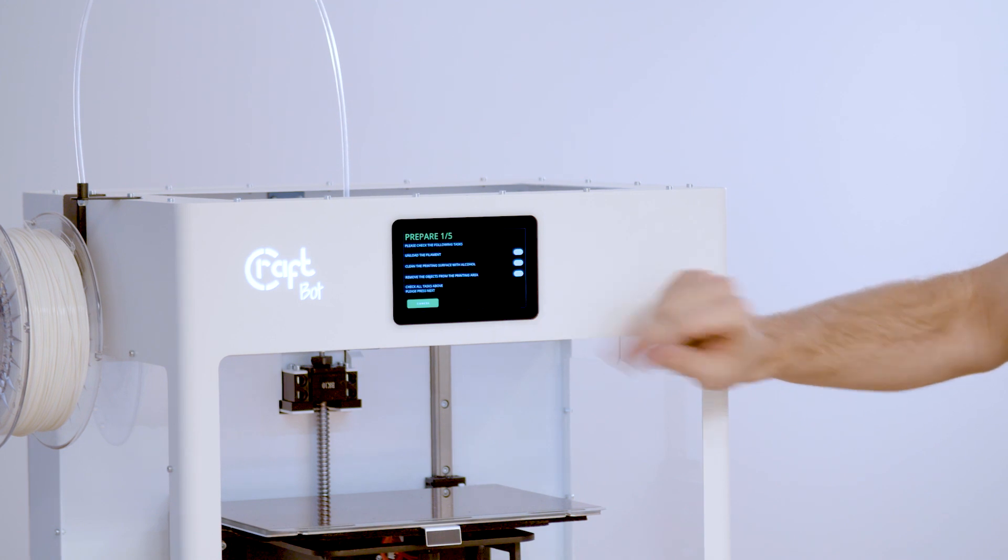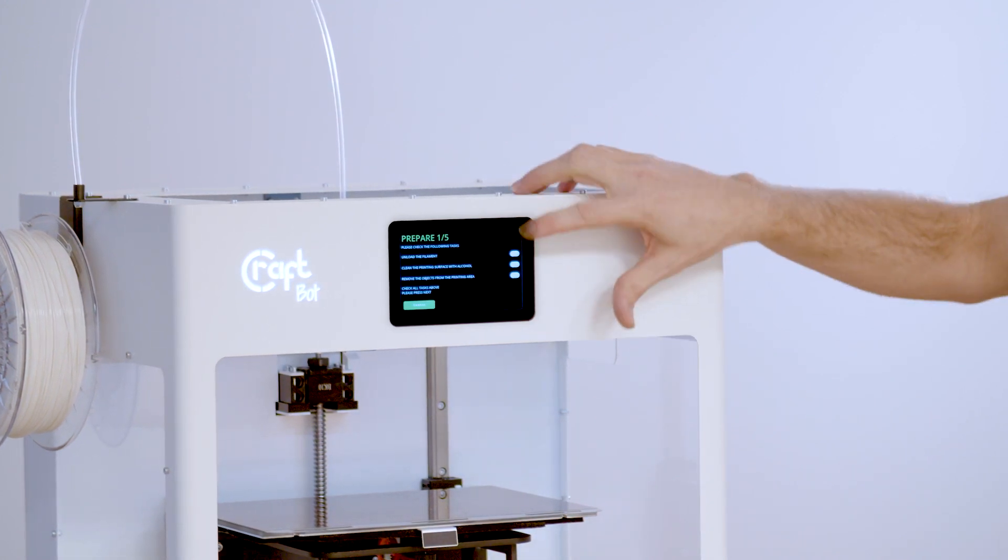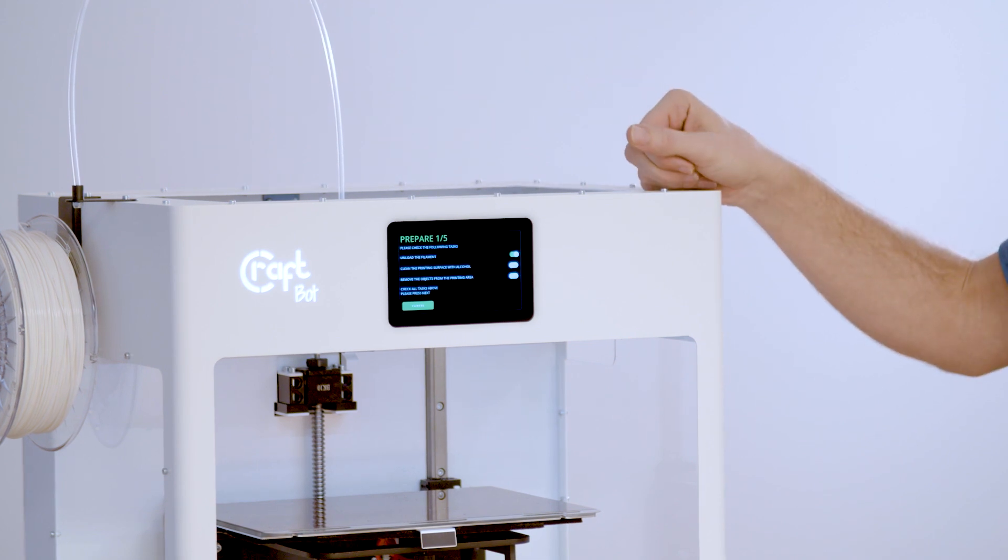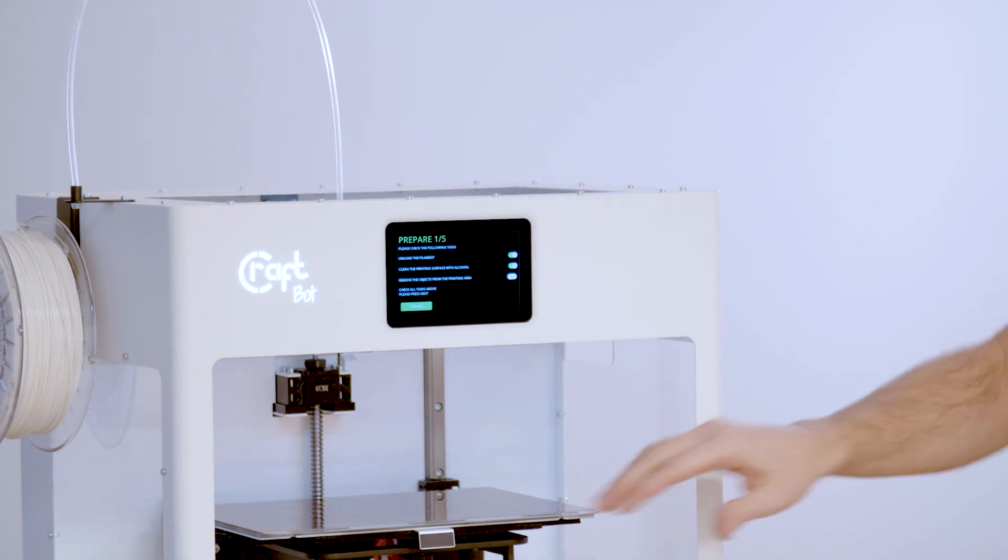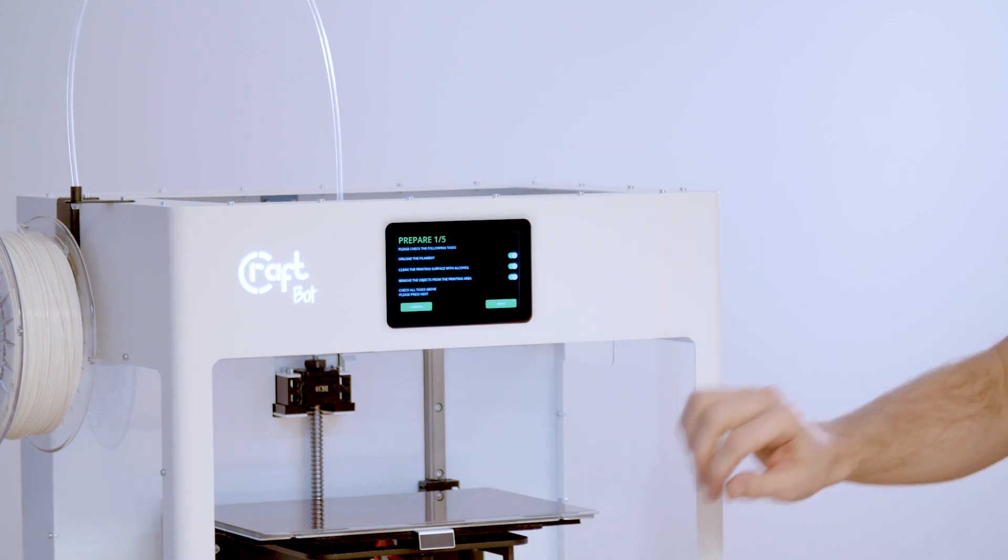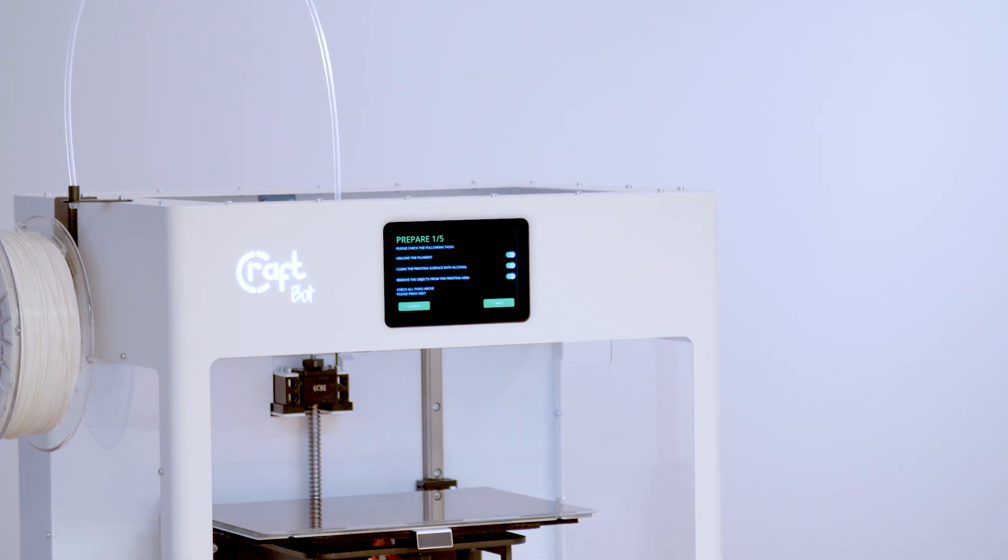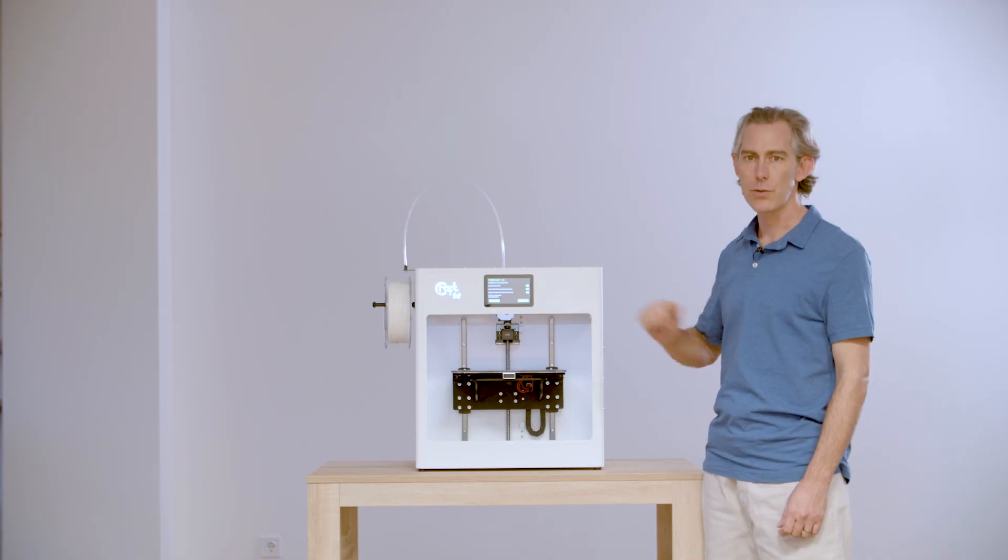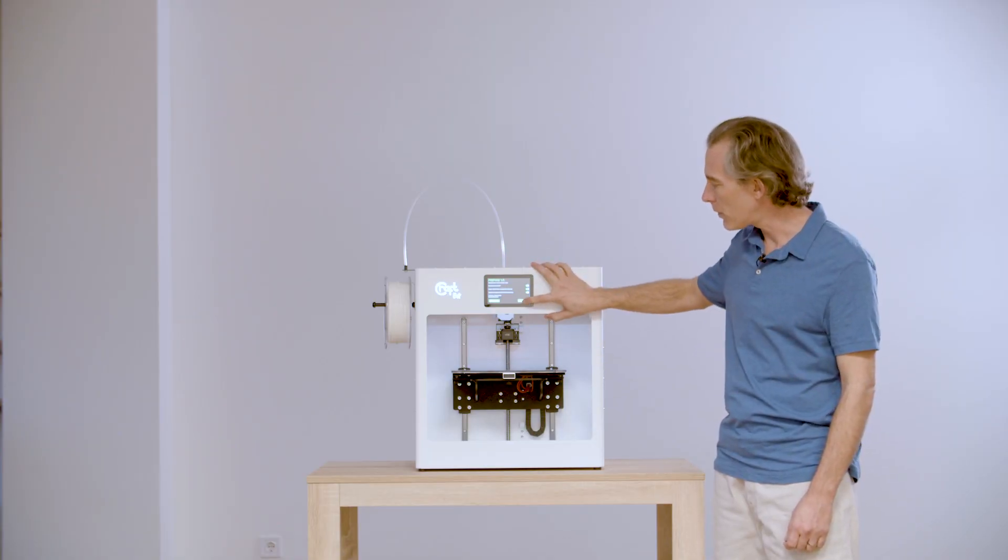Now first, it's going to ask you to do a couple of things. First, make sure that there is no filament in the printer. Then we need to clear off anything from the print surface itself. And finally, we'll want to wash down the print surface with alcohol. You can use the swabs that we provide you in the maintenance kit. And we're ready to get started.